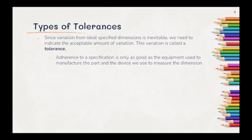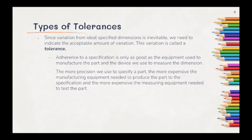Adherence to a specification is only as good as the equipment used to manufacture the part and the device we use to measure the dimension. We can only be as accurate as the tools we use to both create a part and the device we use to measure the part. The more precision we use to specify a part, the more expensive the manufacturing equipment needed to produce the part to the specification, and the more expensive the measuring equipment needed to test the part.